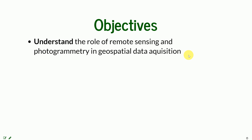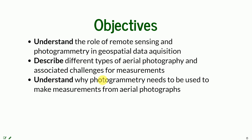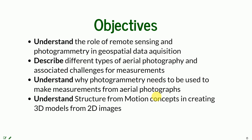What are we going to learn today? First, we need to understand the role of remote sensing and photogrammetry in geospatial data acquisition. We're going to talk about aerial photography and why it is challenging to use it for measurements — and why photogrammetry needs to be used in order to make measurements from aerial photographs. Lastly, we're going to look into computer vision concepts and how structure from motion can help us transform 2D images into 3D models.